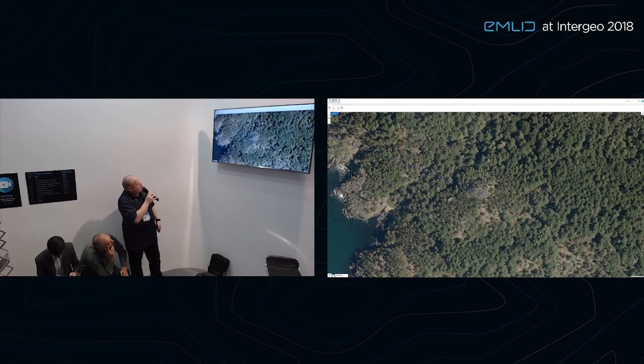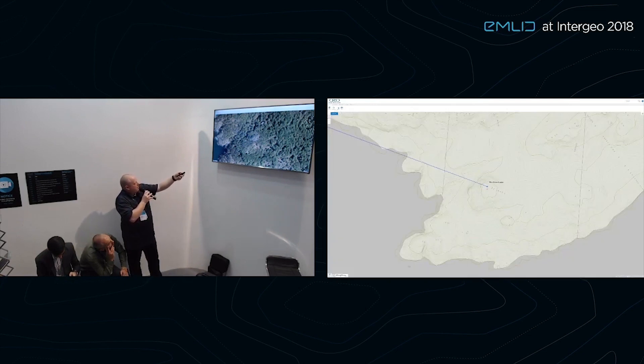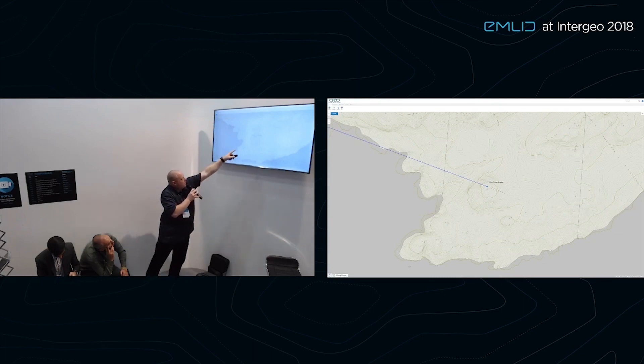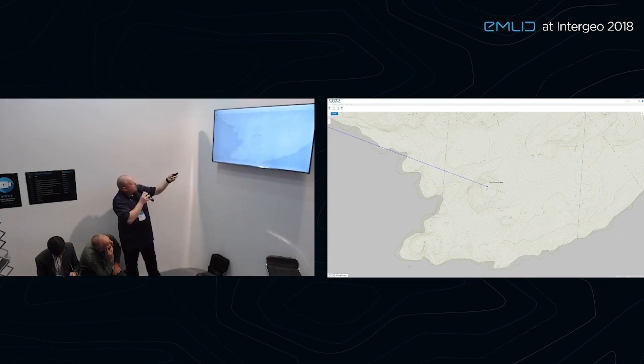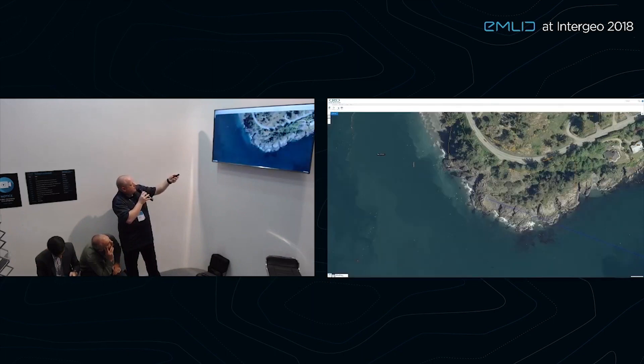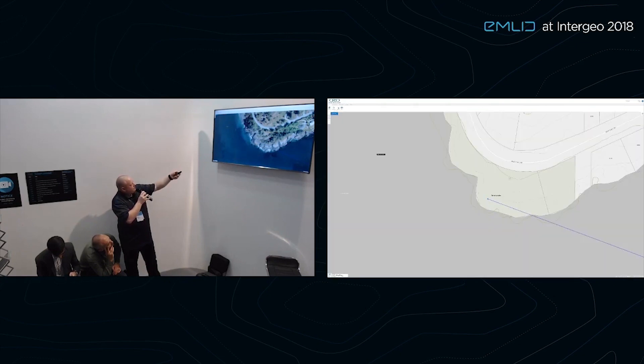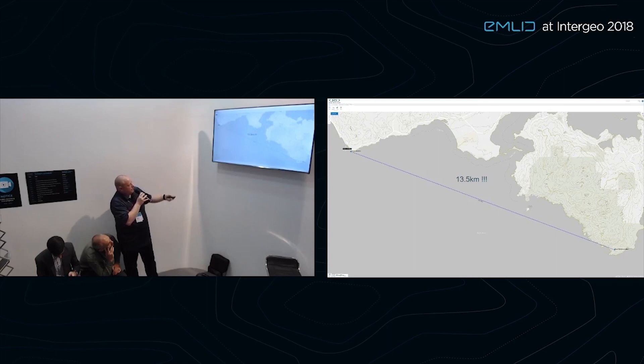This is the overview of the base location. It's quite a forested area. But we've got up above the trees. So it's good. Here's the ortho photo showing that we're up on the high point. And this is the rover location. Also, out on a point. We're by the sea, obviously. And the ortho there. So there's the overview of where we are. 13 and a half kilometers. It's pretty good.